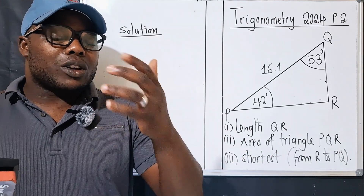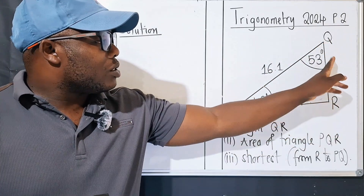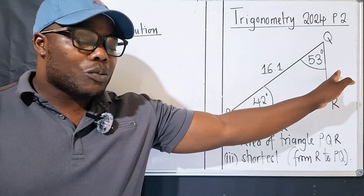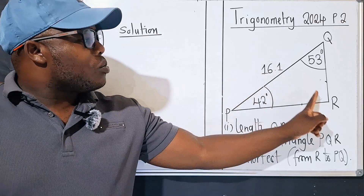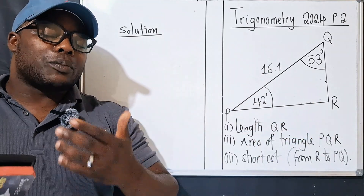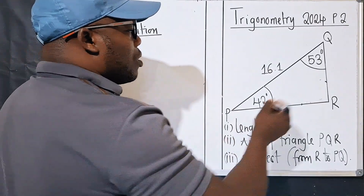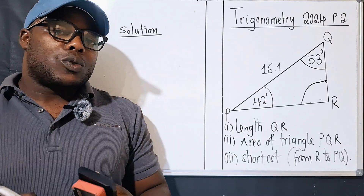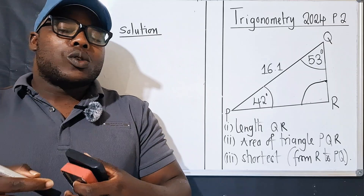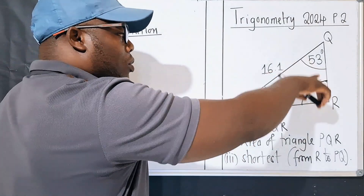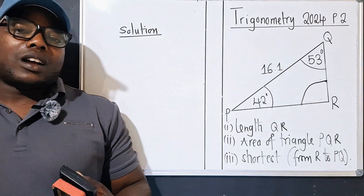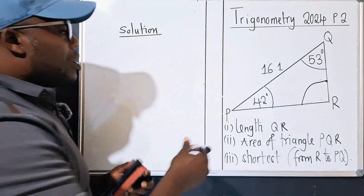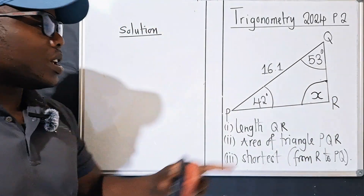When we look carefully at the side we are looking for, QR, it pairs with its opposite angle. That side moves with the angle opposite to it. The problem is we don't know that angle, so we need to find it using the triangle angle sum property: all three angles must add up to 180 degrees.